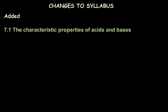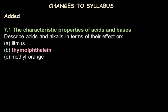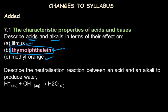The next change is in characteristic properties of acids and bases. The indicator thymolphthalein is now added to the syllabus, so students need to specify the color change of thymolphthalein with acids and alkalis — litmus and methyl orange were already included. Also now specified is the neutralization reaction between an acid and alkali written in ionic form.